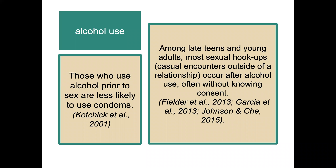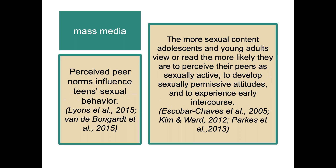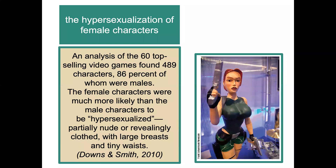Among late teens and young adults, sexual encounters often occur after alcohol use and sometimes without knowing consent, making alcohol use very problematic. Mass media and perceived peer norms also influence behavior. The more sexual content adolescents and young adults view or read, the more likely they are to perceive their peers as sexually active, to develop sexually permissive attitudes, and to experience early intercourse. There is also the hypersexualization of female characters — an analysis of the 60 top-selling video games found 489 characters, 86% of whom were male, and female characters were much more likely to be hypersexualized, partially nude, or depicted with revealing clothing, large breasts, and a tiny waist.